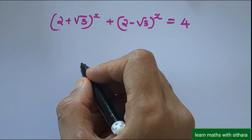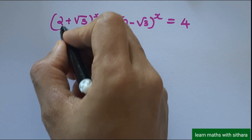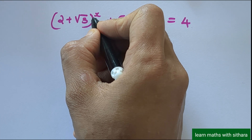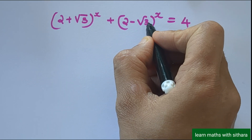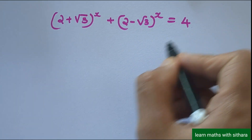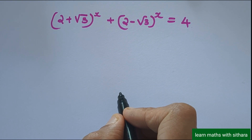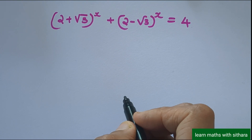Hello everyone. Our question is (2 + √3) raised to x plus (2 − √3) raised to x equal to 4. How are we going to solve this equation?